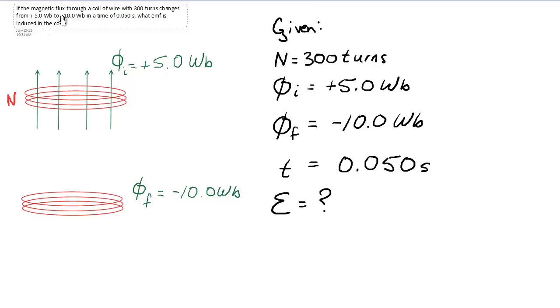Here we have a question that states that the magnetic flux running through a coil of wires with 300 turns is changing from a positive value of 5 Webers to a negative value of 10 Webers. It takes 0.050 seconds to do this, to make this change.